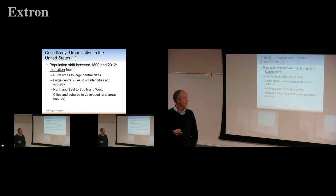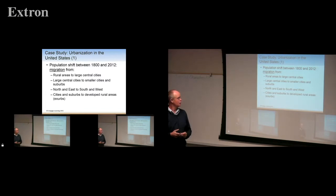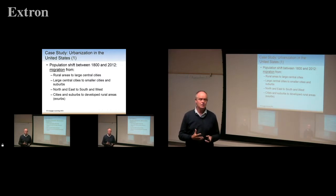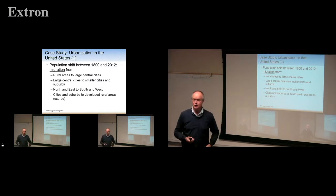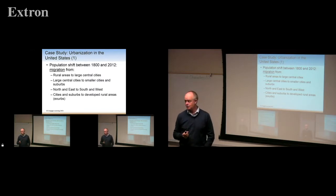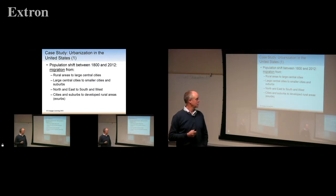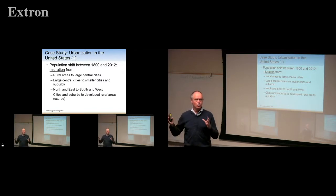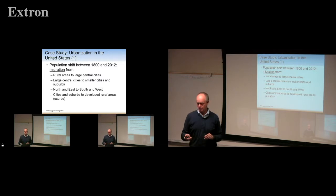Looking at the population shift from 1800 to 2012: rural people move toward cities mostly to look for jobs; large central cities move to smaller cities — that's suburbia. We are suburbia for the LA basin. People moved into this area so they would have cheaper living and make that amazing commute down into the valley. Rural areas have become very developed, and we're going to talk about a thing called urban sprawl.